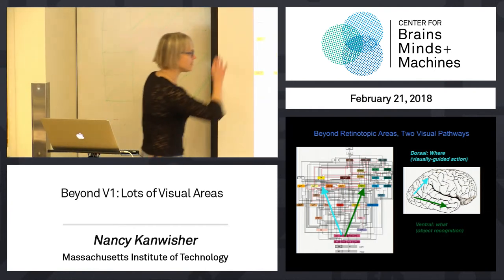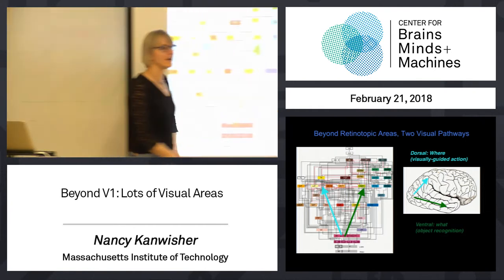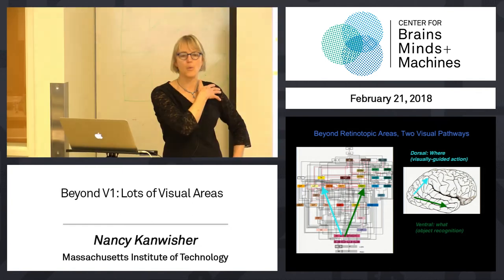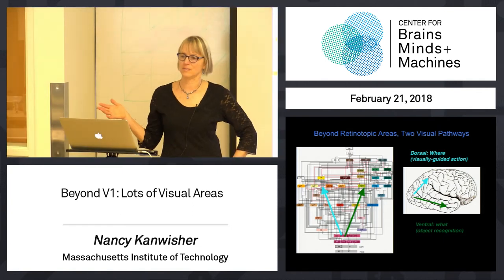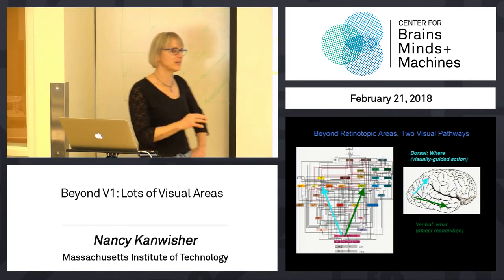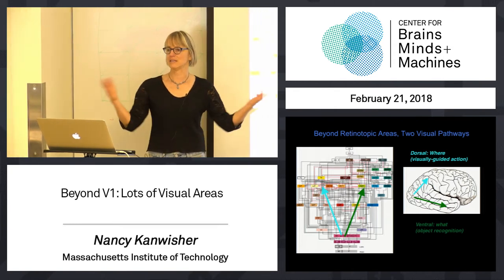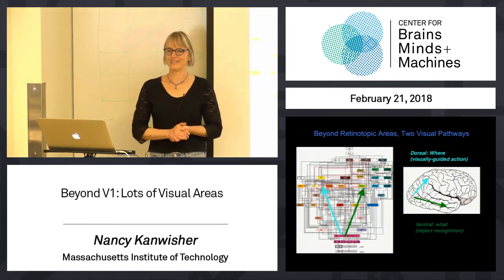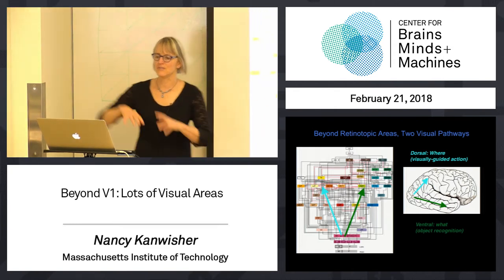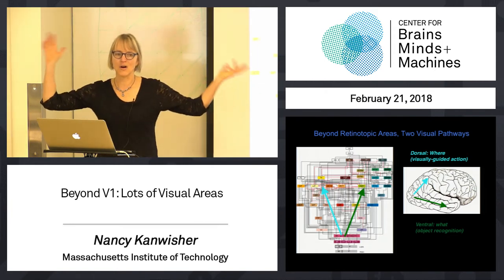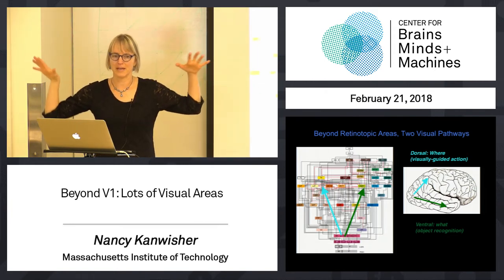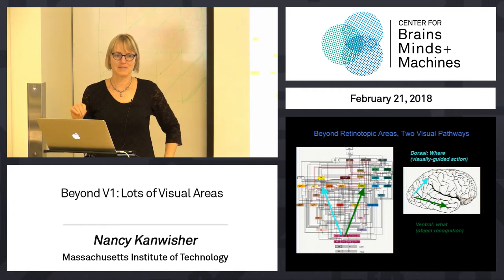The ventral pathway is the bit I've been mostly talking about — that's figuring out what's in front of you. So recognizing faces, recognizing objects, reading words, recognizing places — all that stuff. This is a very loose division of dozens of visual areas into two main processing pathways.